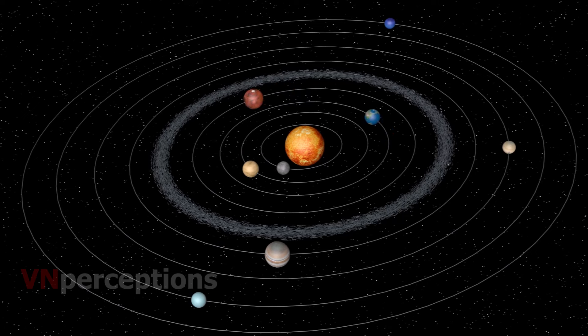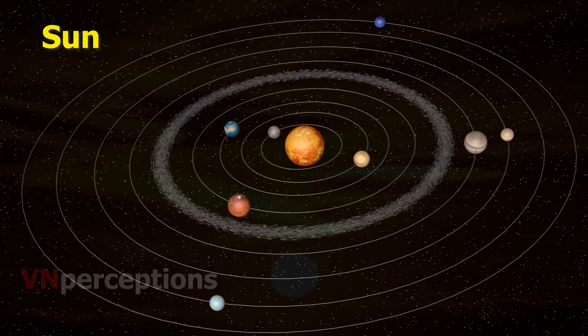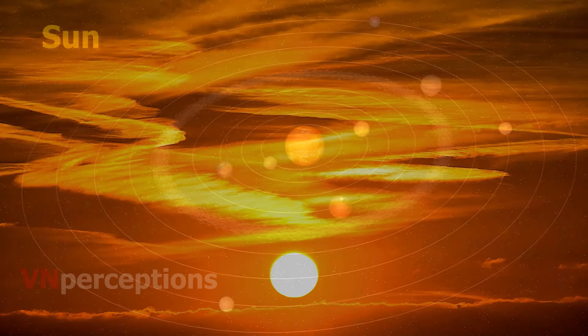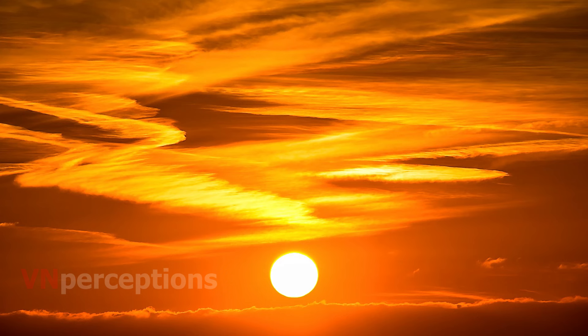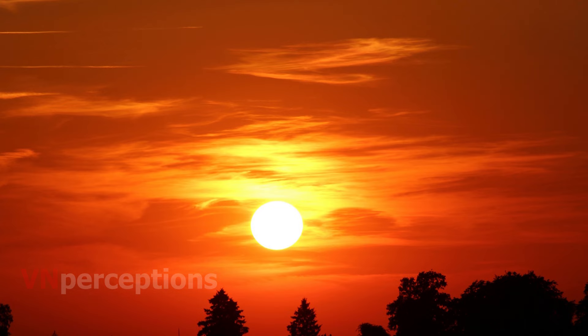Talking about the sun. The sun is the nearest star from us. It is continuously emitting huge amount of heat and light. The sun is the source of almost all energy on the earth. In fact, the sun is the main source of heat and light for all the planets.